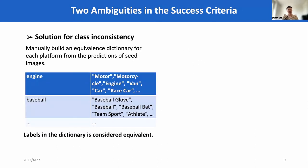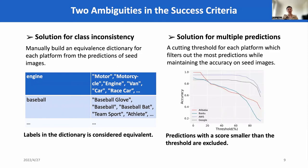To address the class inconsistency problem, we manually build an equivalence dictionary for each platform from the predictions of seed images. We use the predictions of seed images to avoid potential bias introduced by adversarial examples. For example, for the ground truth label engine, we use the equivalent labels containing motor, motorcycle, engine, etc. To address the multiple prediction problem, we use the cutting threshold method. Our principle is that the cutting threshold should filter out the most predictions while maintaining the accuracy on seed images. Predictions with a score smaller than the threshold are excluded from the evaluation.